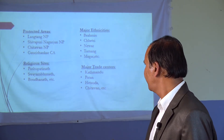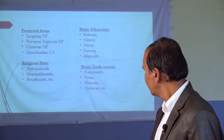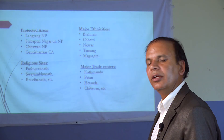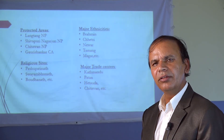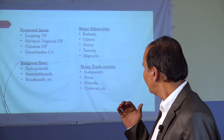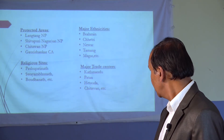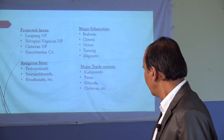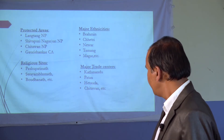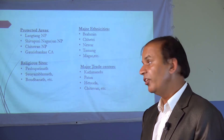The protected areas are lands designated to preserve biodiversity and vegetation. We call them national parks, conservation areas, or wildlife reserves. In Bagmati Province, these include Langtang, Shivapuri Nagarjun, Chitwan, and Gaurishankar — as you can see on the screen.